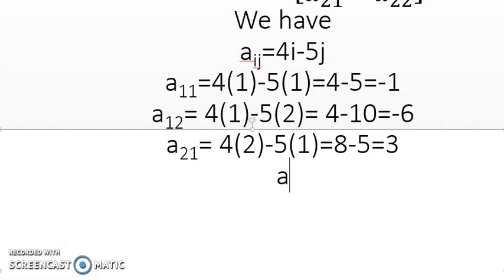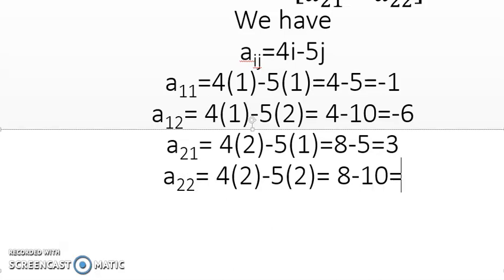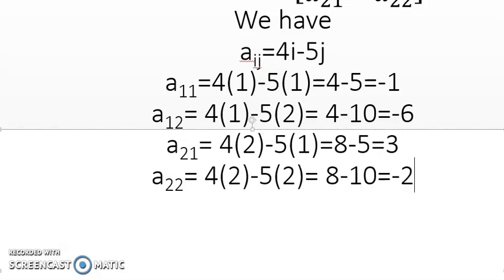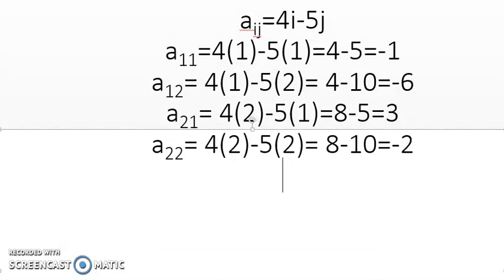And then finally A_22. Look at here now, 4 times 2 minus 5 times 2. i is 2 here and j is also 2. So now 4 times 2 is 8 minus 5 times 2 is 10, which means minus 2.